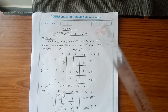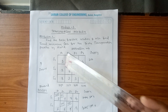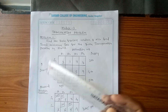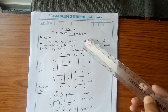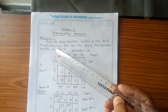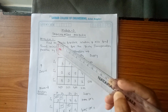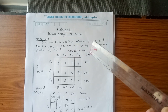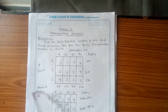Now the given tableau has sources on one side and destinations on the other. Sources given are S1, S2, S3, and destinations are D1, D2, D3, D4. Along with that, supply values and demand values are also given.